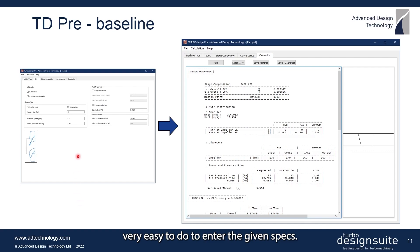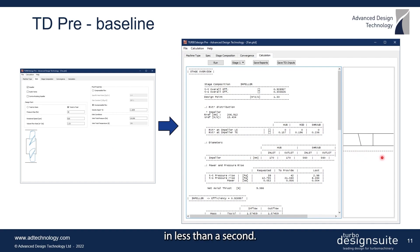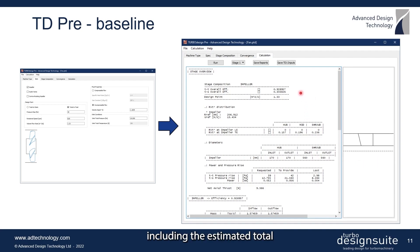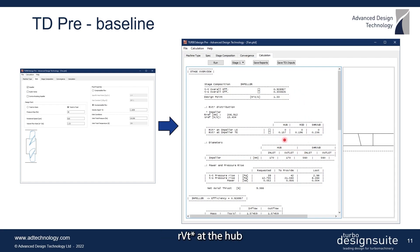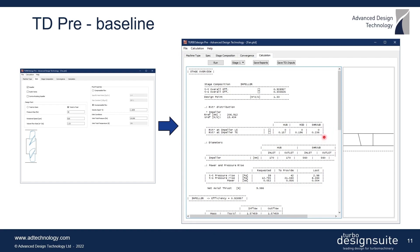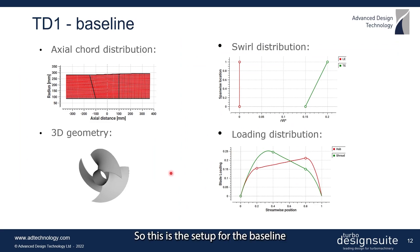Using our mean line code TurboDesign Pre, it's very easy to enter the given specs and it quickly generates the meridional shape of the fan in less than a second. It also provides a detailed report including the estimated total-to-total and total-to-static efficiencies, as well as the required RV-theta-star at the hub, mid-span, and shroud, which is equivalent to the work coefficient and will be used for the 3D inverse design of the blade.